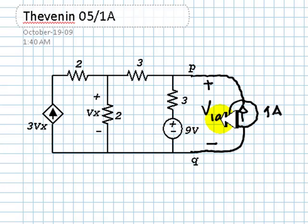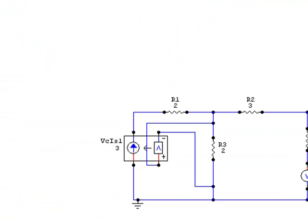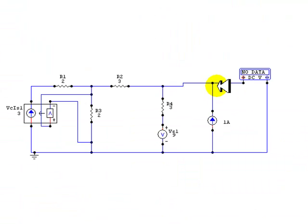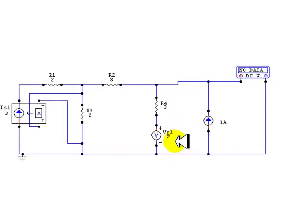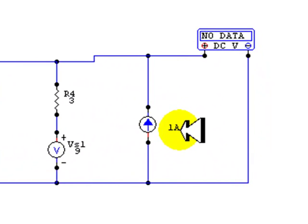I will use, in this case, CircuitMaker. There is the circuit, and at the port PQ, I have connected a 1-Amp current source, and this voltmeter will measure directly the voltage that appears, the one we called V1A.